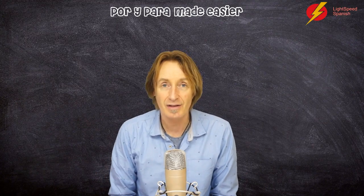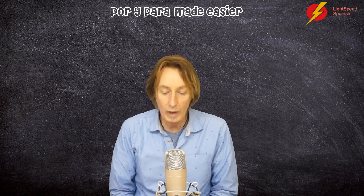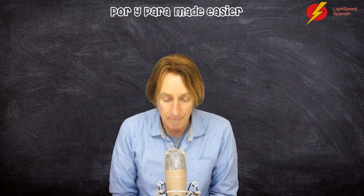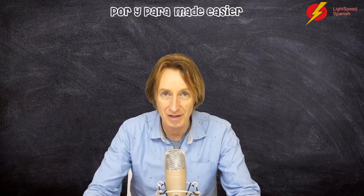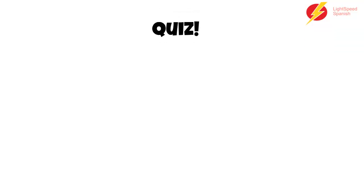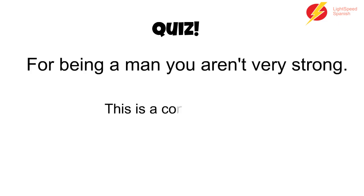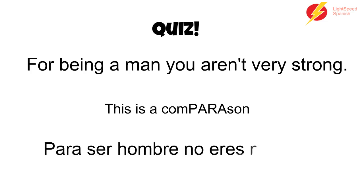Now let's answer the quiz. Which two sentences need por, and which two need para? If you've listened to the lesson, I think you'll know. 'For being a man, you aren't very strong' — well, that one is a comparison, and so we're going to use para. That sentence would be: para ser hombre, no eres muy fuerte.